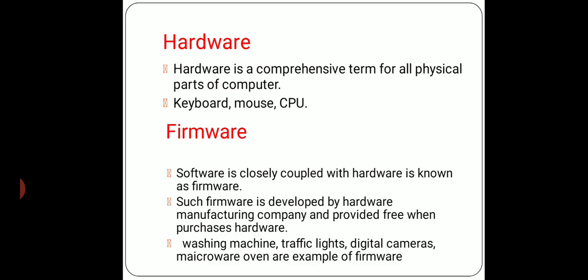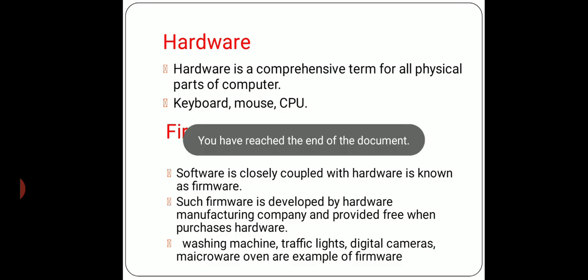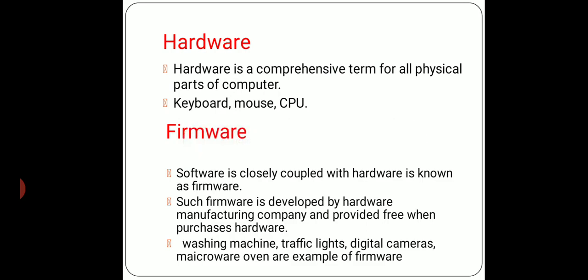Hardware is the physical part of a computer — examples given are keyboard, mouse, and CPU. Here your first chapter is finished. In the next session, objectives will be given to you which you will need to solve. Thank you!